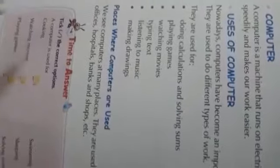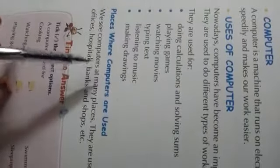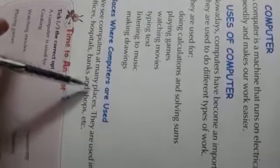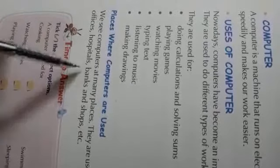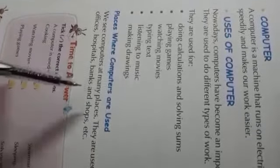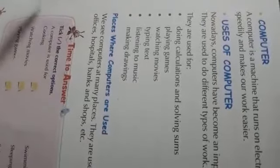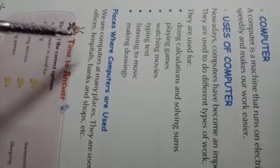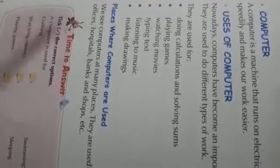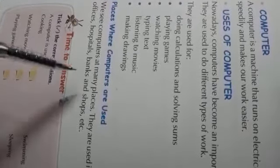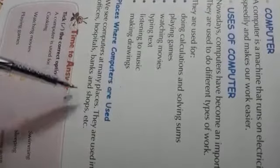Now we can see — places where computers are used. We see computers in many places because computers are a very important part of our life. They are used in schools, homes, offices, hospitals, banks, and shops. Computer is very important to do calculations and it helps us for many works.